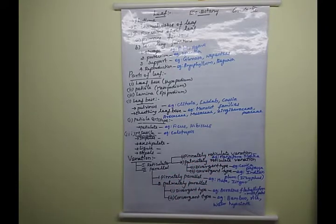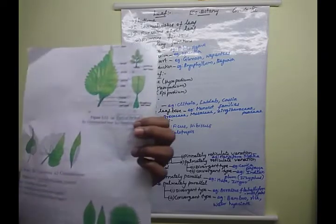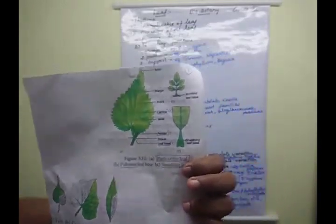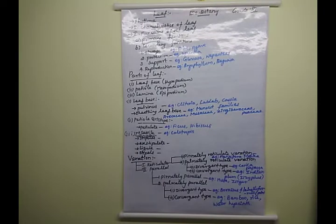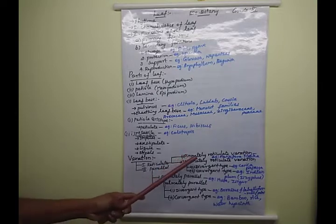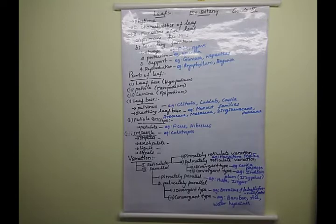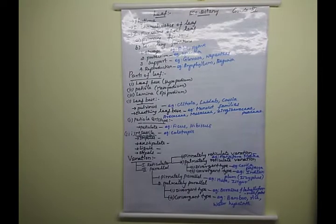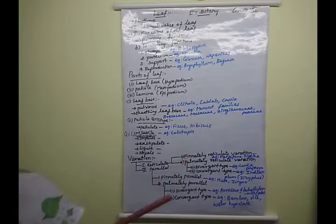In palmately reticulate venation, two or more principal veins arise from a single point and proceed outward or upward toward the margins. This type is called palmately reticulate venation. It further comes in two types: divergent and convergent. In divergent type, all veins originate from the base and diverge to touch the leaf margin. In convergent type, veins start from the base but join at the apex of the leaf.